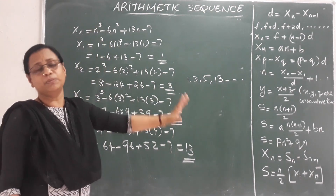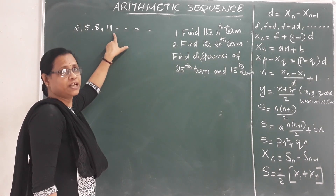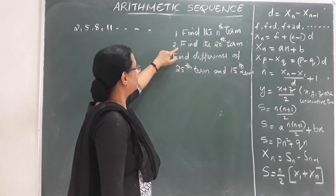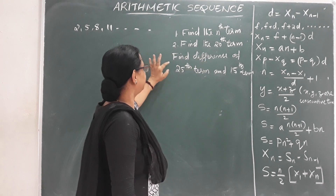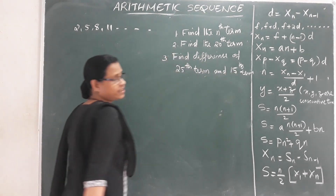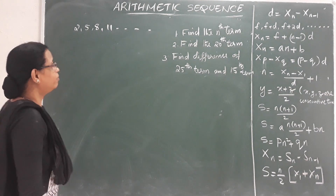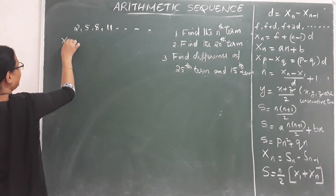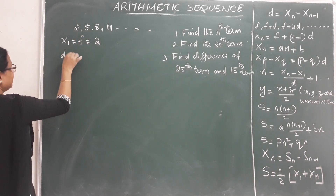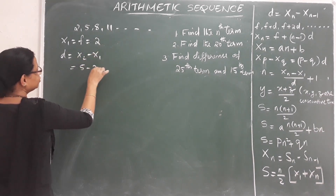For an AP, the general formula must be of the form an plus b, where the power of n is 1. New sequence: 2, 5, 8, 11. This is an arithmetic sequence. The first term x1 equals 2. The common difference D equals x2 minus x1, that is 5 minus 2, equals 3.